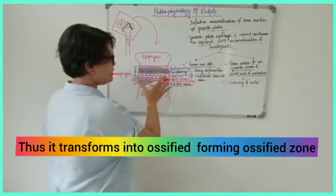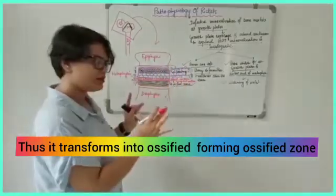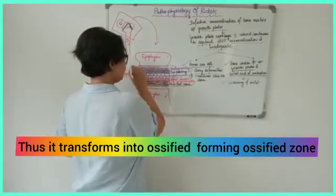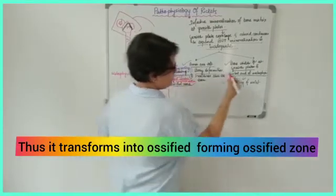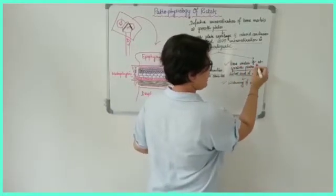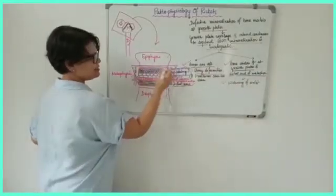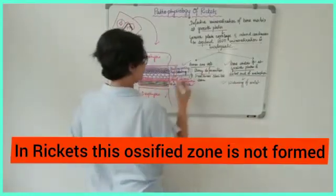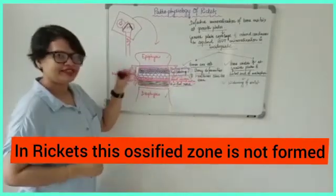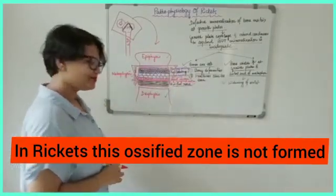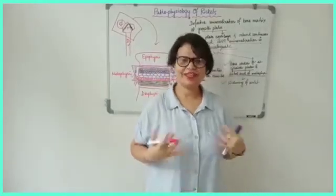As a consequence, the upper three zones—resting, proliferating, and hypertrophic cells—they continue to grow. These become expanding. The upper zones become expanding. That is why bone width increases at growth plates and distal end of the metaphysis. This region is the distal end of the metaphysis, so bone width increases at this plate. That is all about the pathophysiology of rickets in a very short manner. Thank you.